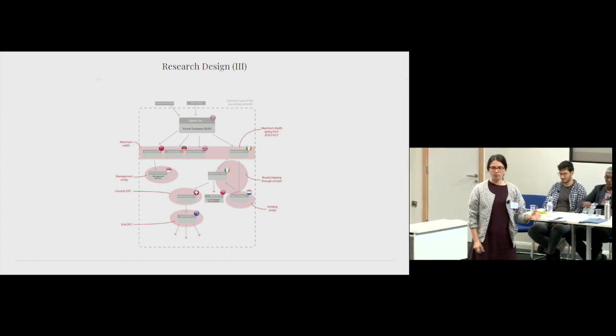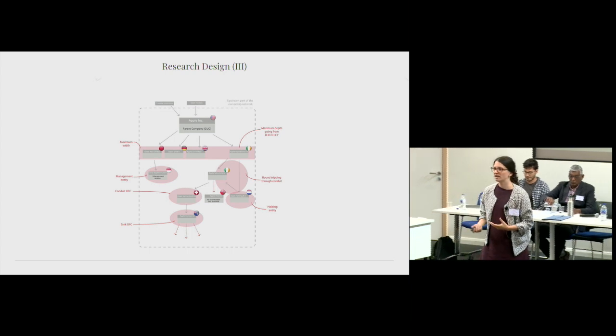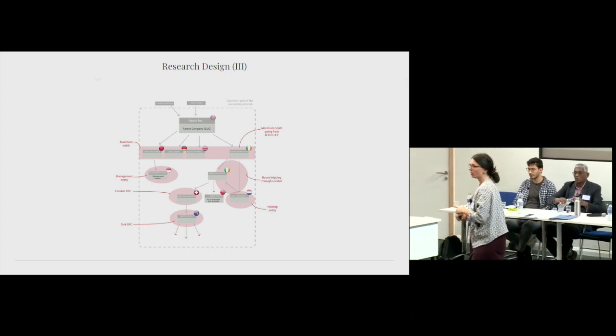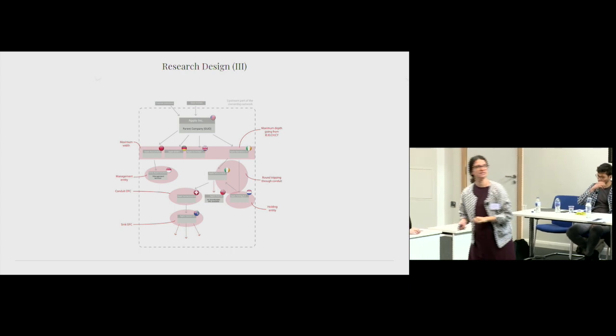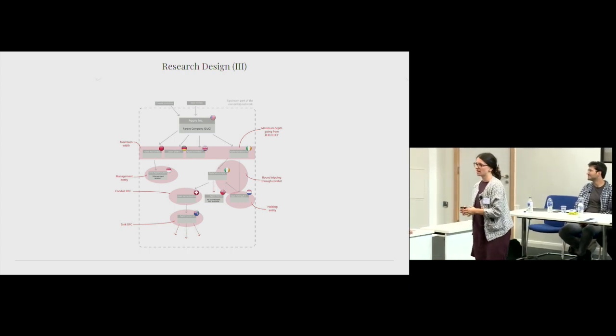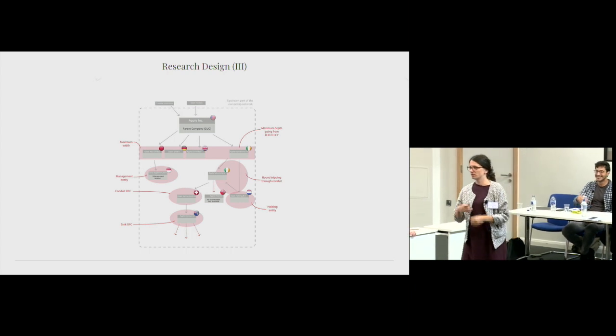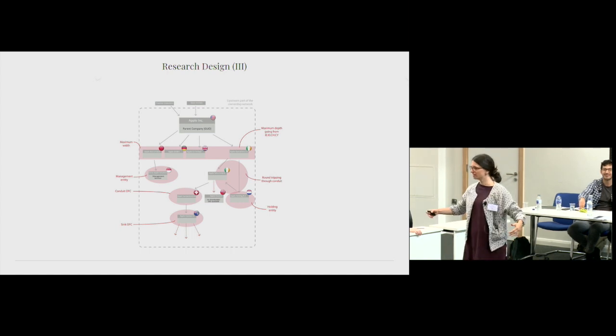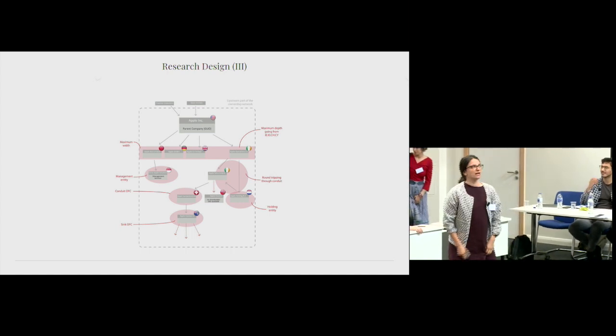And then we looked at corporate forms. How many of the subsidiaries are holding companies? How many of them are management companies? And as a third feature, we looked at the general complexity of the corporate structure. So the depth, width, and we also added entropy.